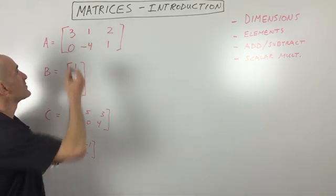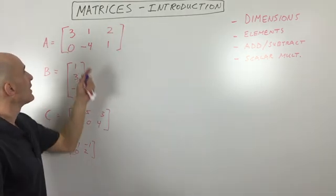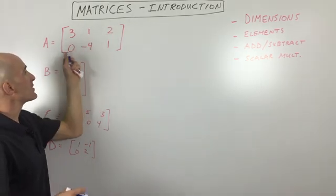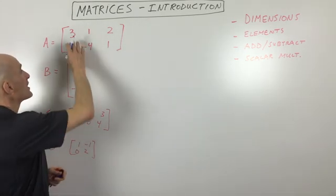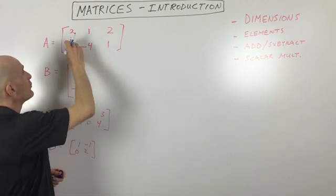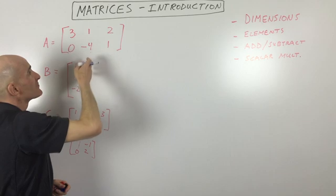You can tell it's a matrix because of this bracket - the square bracket there. Each one of these numbers in the matrix is called an element, and you can identify the element by its position. For example, these are the rows that go this way. Columns are like the columns of a building.